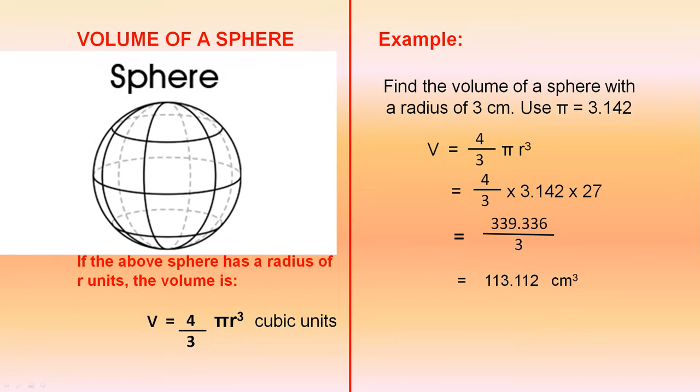The volume of a sphere. If the above sphere has a radius of r units, the volume is V equals 4 over 3 pi r cubed cubic units.